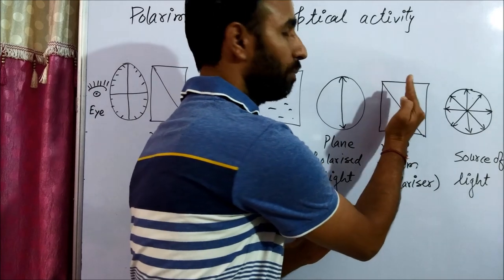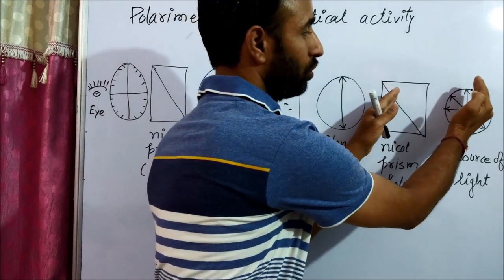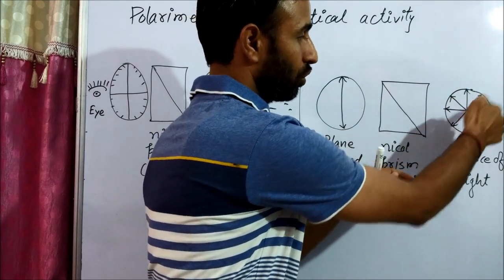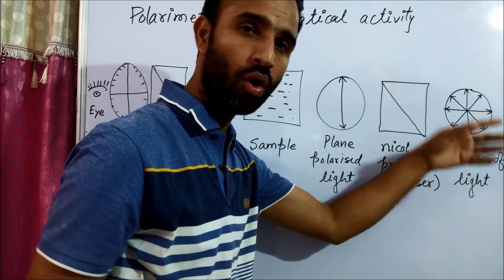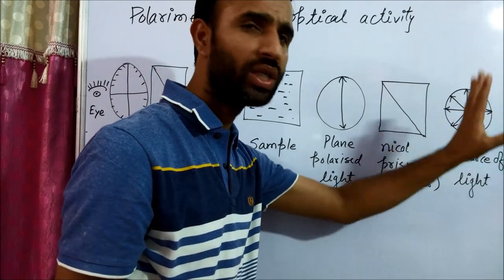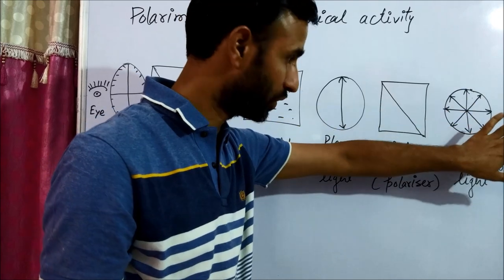This is the source of light. It can oscillate in all planes. This is ordinary light. It oscillates in all planes.